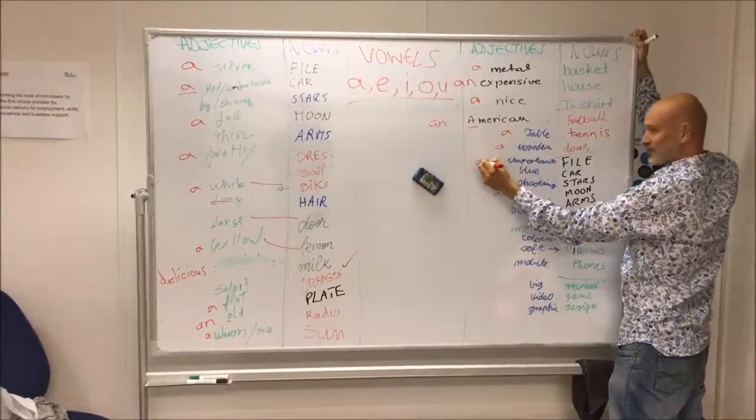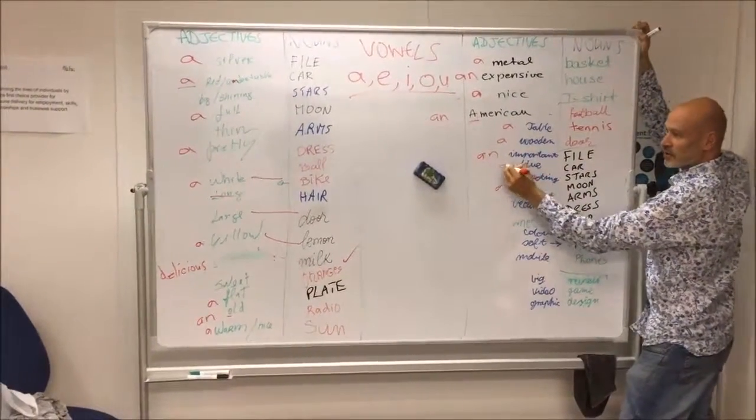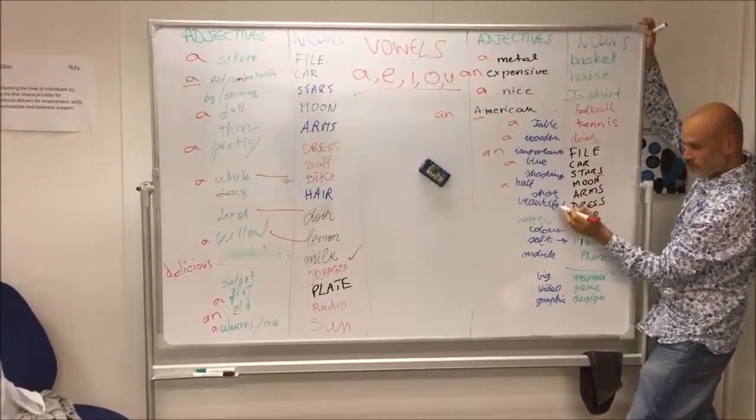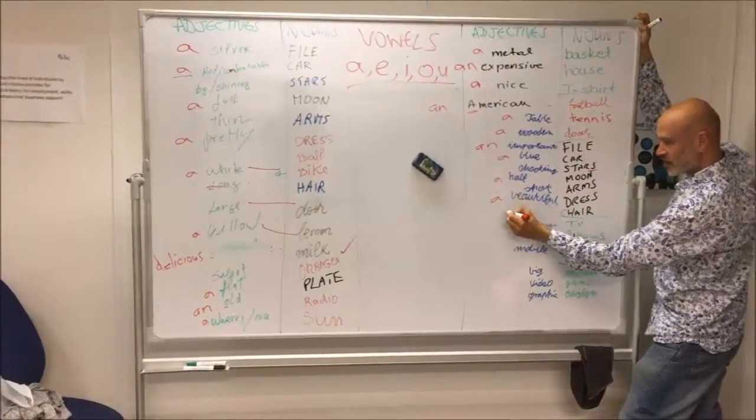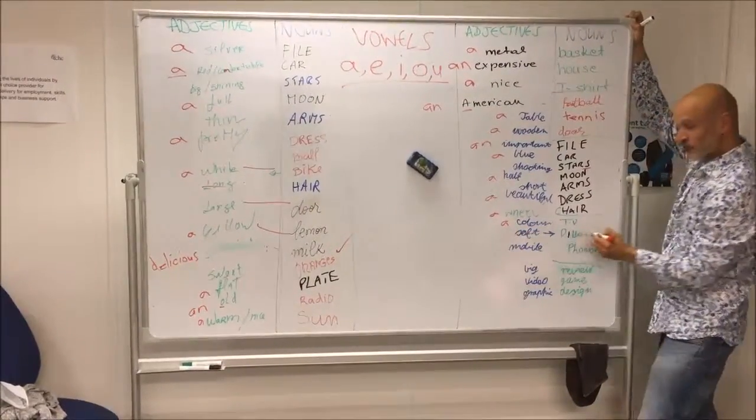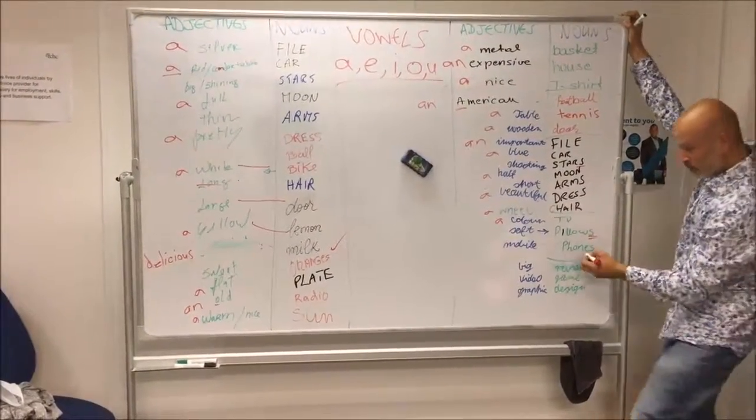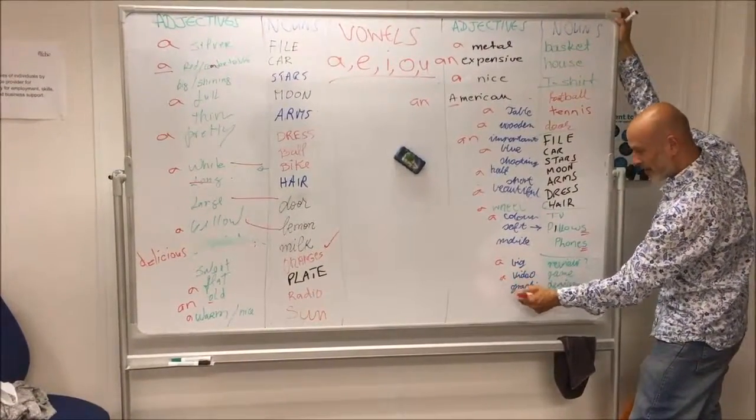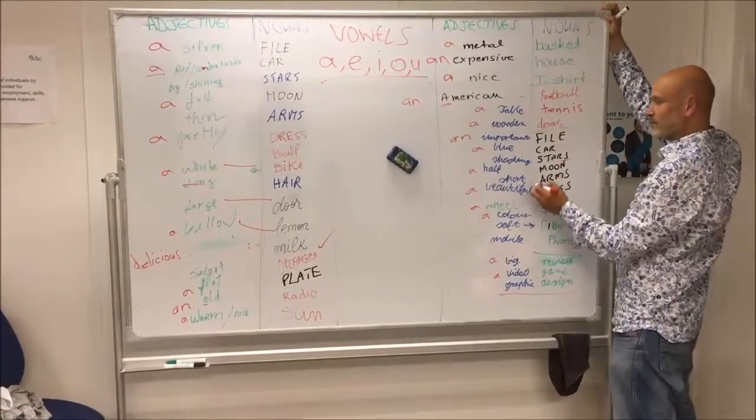So American football - an American football. A table tennis, a wooden door. Good! Nothing because look, it's plural. A beautiful dress, a wheelchair, a color TV, soft pillows plural, mobile phones plural, a big review, a video game, and really graphic design.